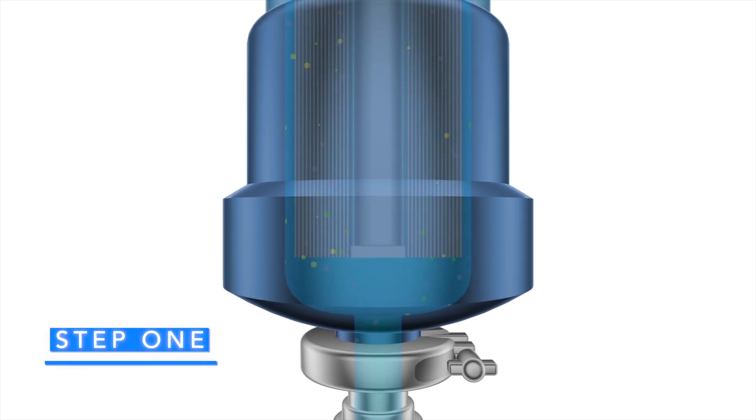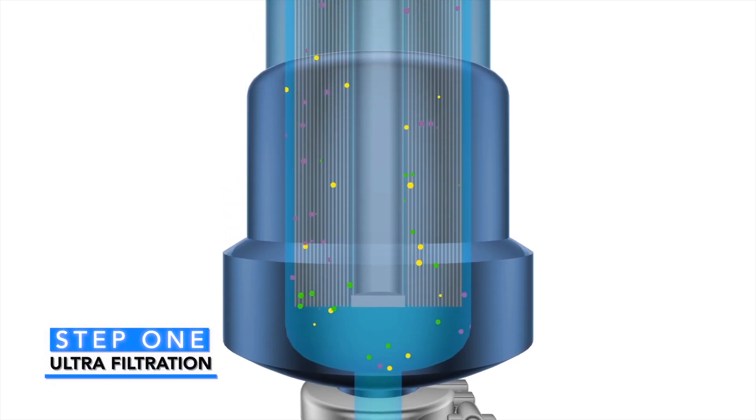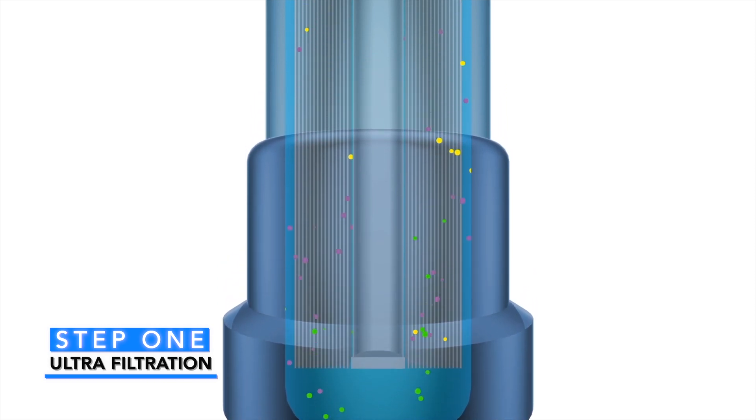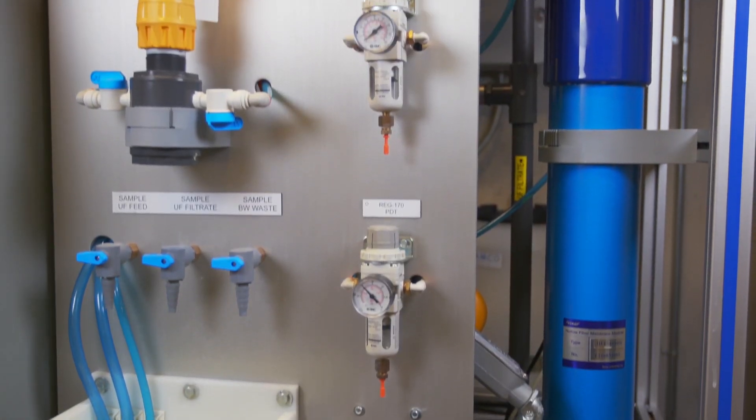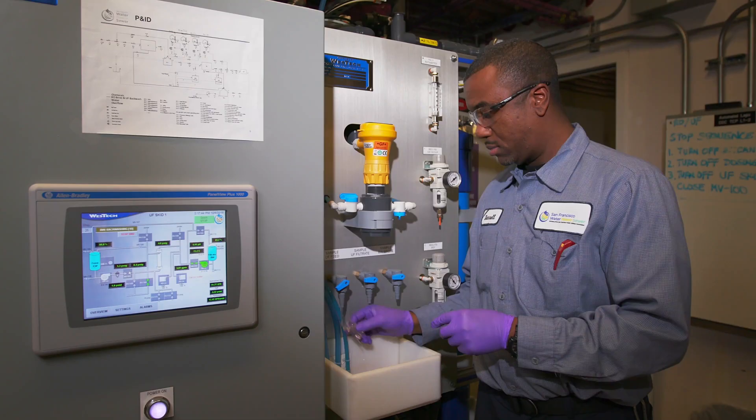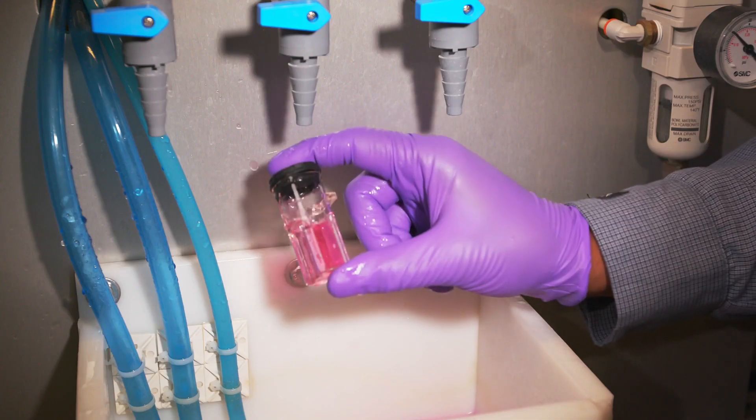With ultra-filtration, water passes through very fine hollow fibers that have openings as small as one one-thousandth the width of a human hair. This process removes particulates, or tiny particles of dirt, sand, and sediment, as well as bacteria and protozoa. The water is then tested for clarity, dissolved organic carbon, chlorine, and nitrates.